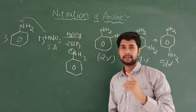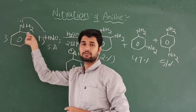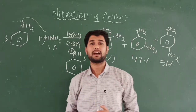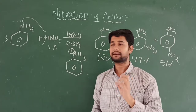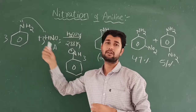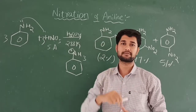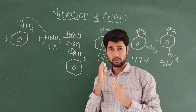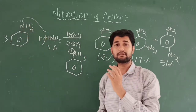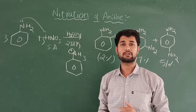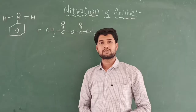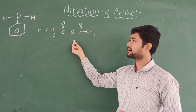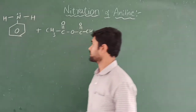To overcome the formation of meta product, we need to block the NH2 group so it is not affected. We do this by reacting aniline with acetic anhydride — a process called acetylation. This protects the NH2 group, allowing it to act as a good activating group for electrophilic substitution, directing mainly to ortho and para positions.